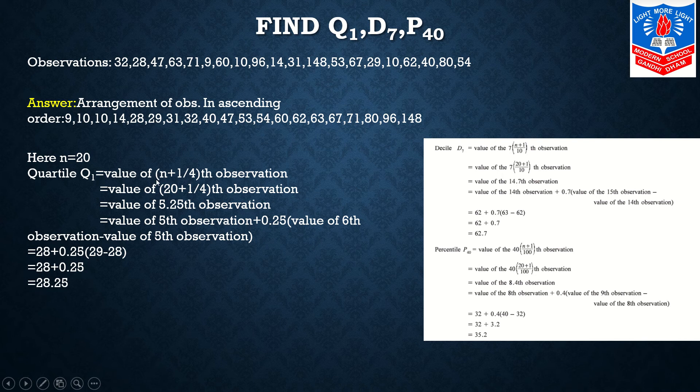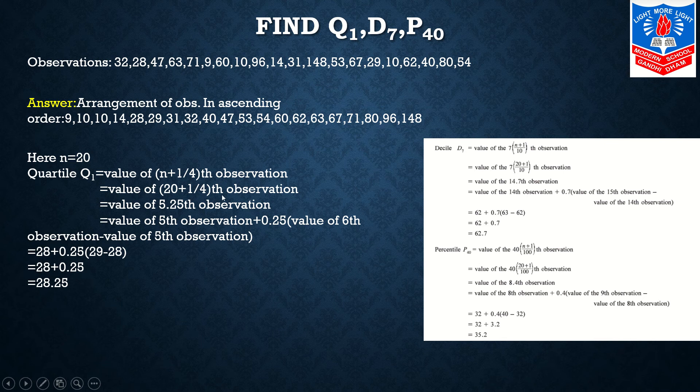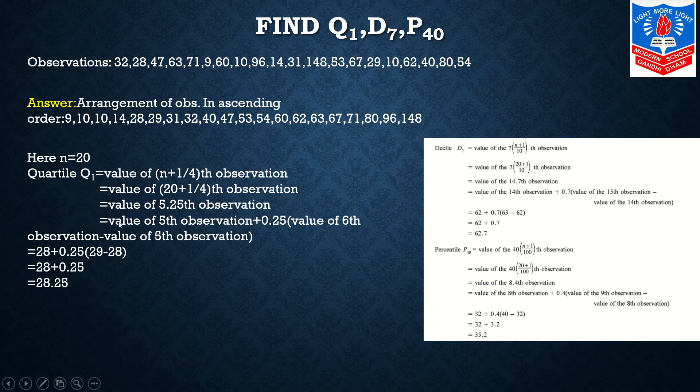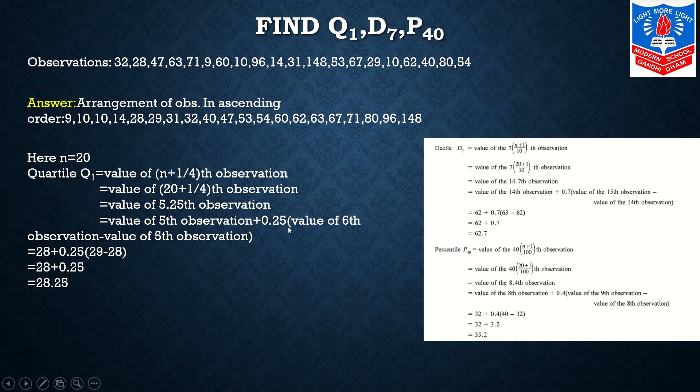So now value of (20+1)/4th observation. Again I am making clear: 20+1 all over 4. So by calculating, 20+1 is 21, if I divide by 4 I will get 5.25th observation. Now our next step equals to value of 5th observation plus 0.25.